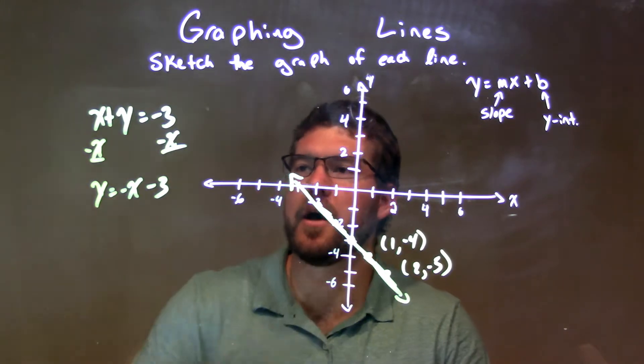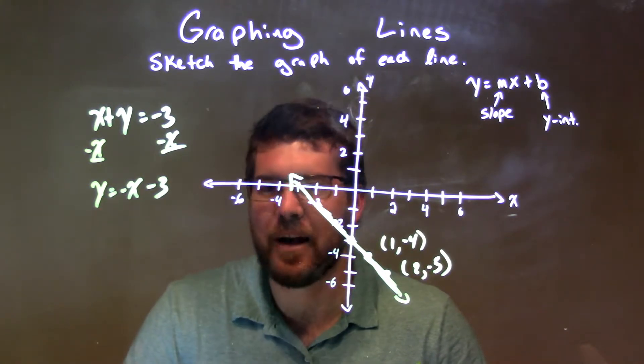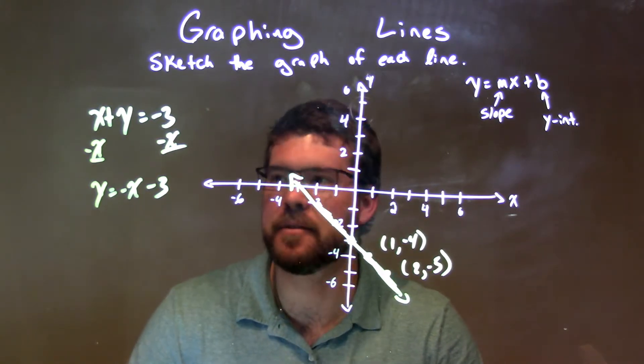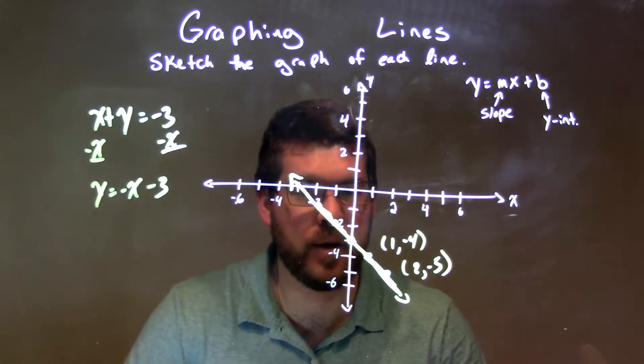To recap, we're given x plus y equals negative 3. I need to get y by itself because slope-intercept form calls for that, and I find that easier. Subtracted x from both sides and got y equals negative x minus 3.